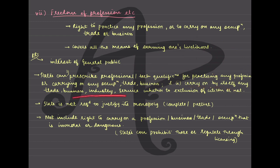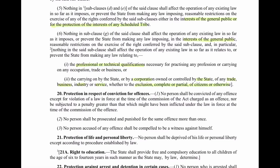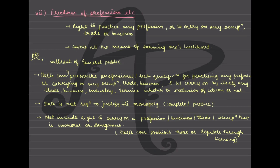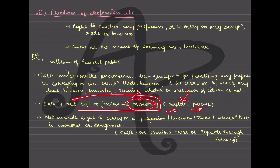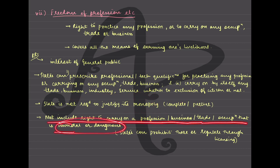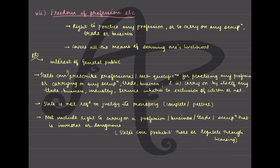The state can also carry on by itself any trade, business, industry or service, whether to complete or partial exclusion of citizens. The state is not required to justify its monopoly - if the state is excluding citizens completely or partially, it is allowed to do that. This includes public sector industries and PSUs. Also, it does not include the right to carry on a profession, business, trade or occupation that is immoral or dangerous - that is obvious. States can prohibit these or regulate them through licensing.